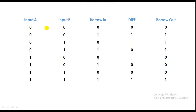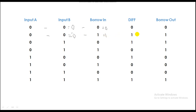So here, zero minus zero is equal to zero, and zero minus zero is also equal to zero. The difference is zero and no borrow has been taken. Over here, zero minus zero is equal to zero and zero minus one — so B needs a borrow — so we put a borrow on it and this becomes two. Two minus one is one, so the difference is one and we have also taken a borrow, so borrow out is one.